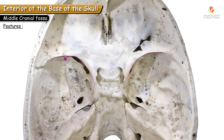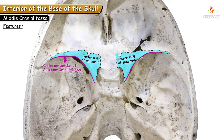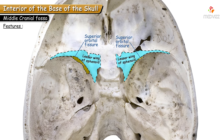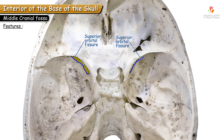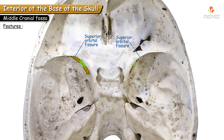Beneath the lesser wing of sphenoid there is a triangular gap called the superior orbital fissure, between the lesser and greater wings of sphenoid, bounded medially by the body of the sphenoid. It is a long fissure communicating the middle cranial fossa with the orbit anteriorly. The lower border shows a projection giving attachment to the common tendinous ring of Zinn. This musculotendinous ring gives origin to some extraocular muscles and divides the superior orbital fissure into three parts: lateral, middle, and medial.